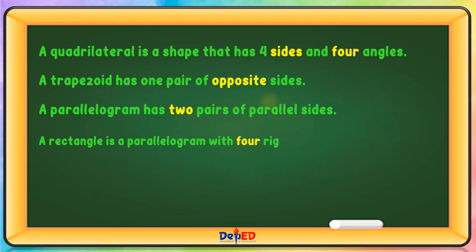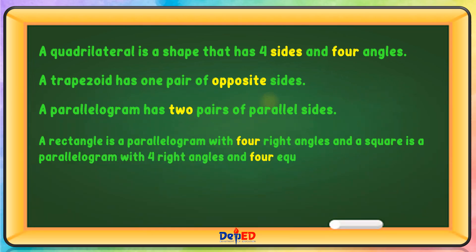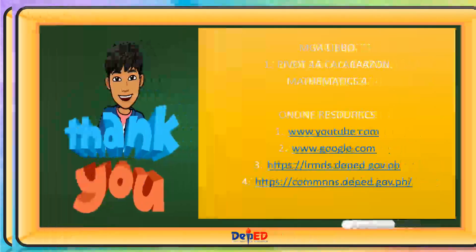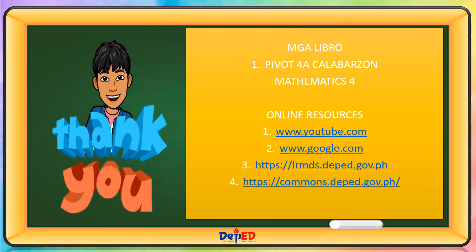A rectangle is a parallelogram with four right angles and four equal sides. A rhombus is a parallelogram with four equal sides. Thank you for watching! Till our next mathematics lesson. Goodbye!